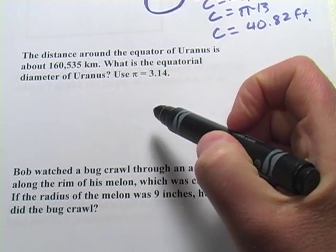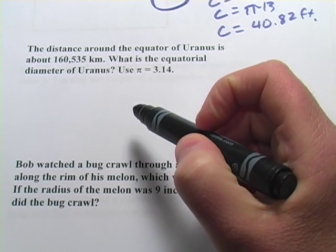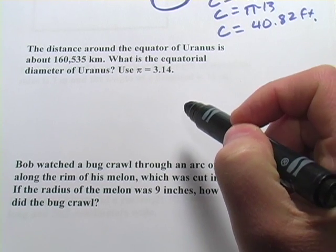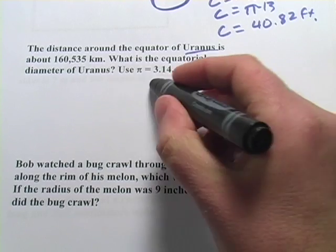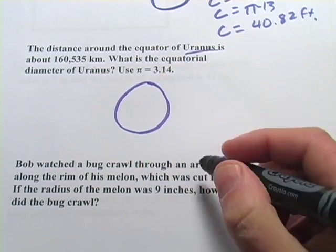Let's look at this next one. The distance around the equator of Uranus is 160,535 kilometers. So Uranus is one of the planets in our outer solar system. It's one of those big gas giants.